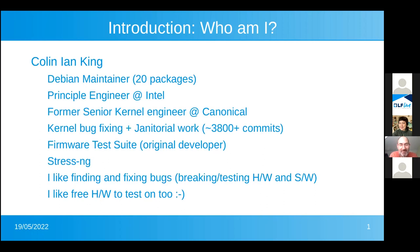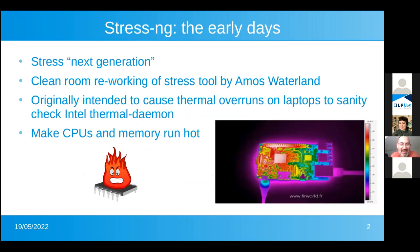A long time ago, about 10 years ago, we were looking at laptop issues at Canonical where laptops were getting a bit too hot. I used the Stress tool, a great tool written by Amos Waterland, but I wanted to add more tests to it. So I started reworking it as StressNG — Stress, the next generation. The intent was to make laptops really busy, burn CPU cycles, and hammer memory and cache to make laptops overrun thermal temperatures. That was to complement the work with the Intel Thermal Daemon, a tool designed to keep laptops from overheating. StressNG was really designed to make Intel Thermal Daemon work hard and make sure that laptops running Ubuntu didn't get hot before they went into production.